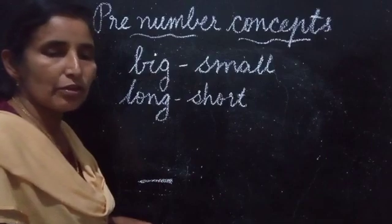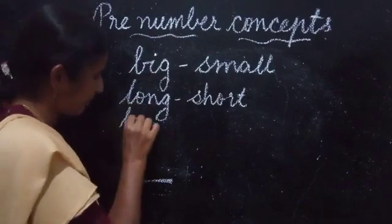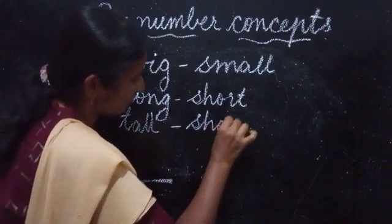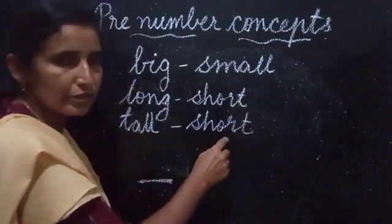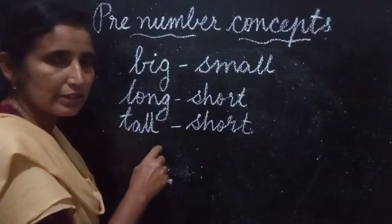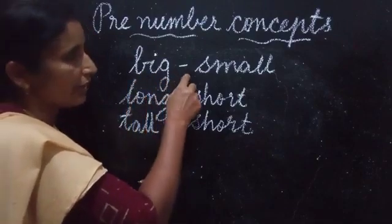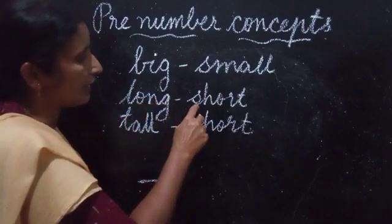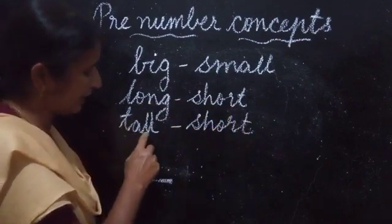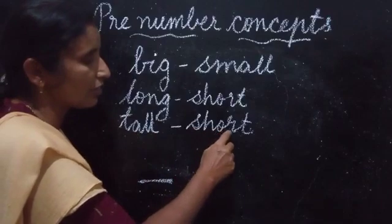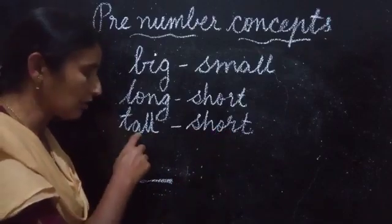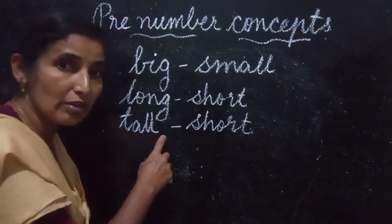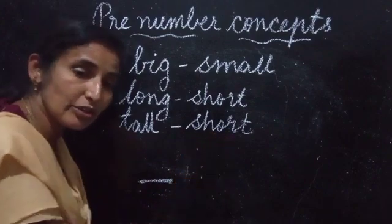Now we are going to learn Tall and Short. T-A-L-L, Tall. S-H-O-R-T, Short. What is the spelling of Tall? T-A-L-L, Tall. S-H-O-R-T, Short.